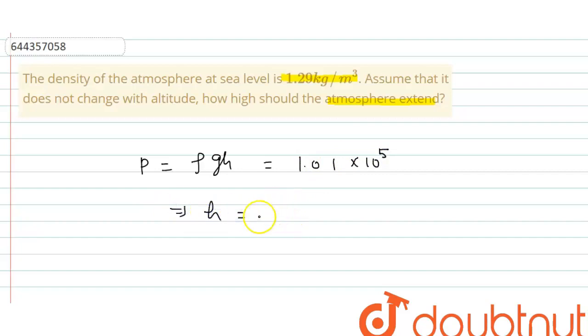So h is equals to 1.01 into 10 to the power 5 divided by density is given 1.29 into g. We know we can take value of g is 10.